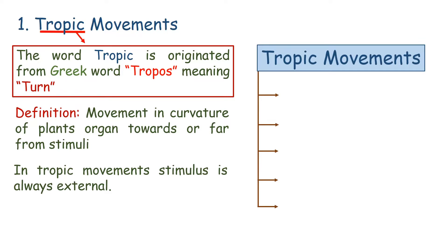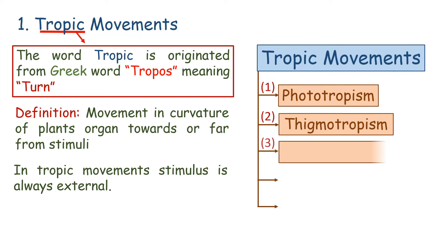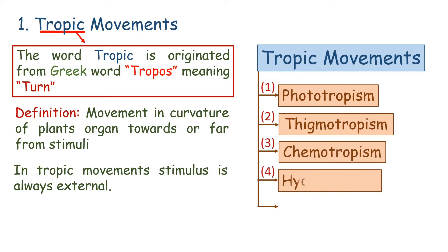On the basis of type of stimuli, tropic movements are further divided into phototropism, thigmotropism, chemotropism, hydrotropism, and geotropism.